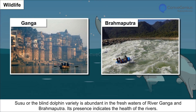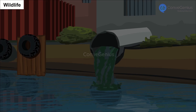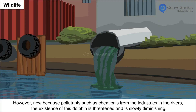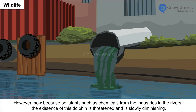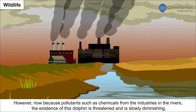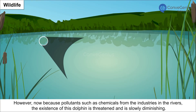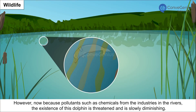The Susu, or blind dolphin, is abundant in the freshwaters of the rivers Ganga and Brahmaputra. Its presence indicates the health of the rivers. However, because of pollutants such as chemicals from industries in the rivers, the existence of this dolphin is threatened and is slowly diminishing.